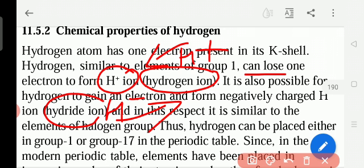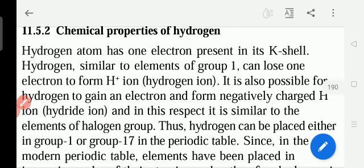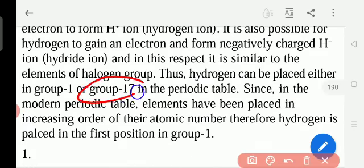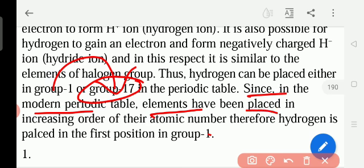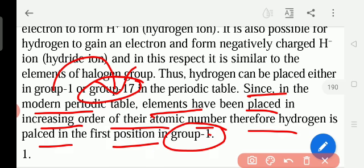That is why when we study in the periodic table, we study hydrogen. Sometimes it is positive, sometimes it is negative. That is why the place is given in the first number. And if we see group 17, halogens - chlorine, bromine, iodine, fluorine - they also lose one electron to fill their octet. Hydrogen also can lose or gain one electron, so it is also related to group 17. Since in the modern periodic table, elements have been placed in the increasing order of their atomic number, therefore hydrogen is placed in the first position of the group because the atomic number is 1.